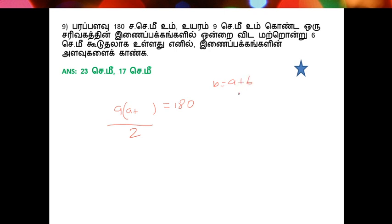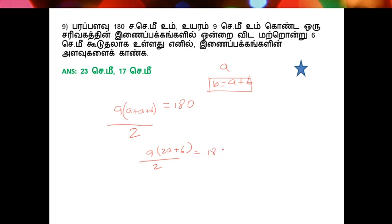6 centimeter plus 6 centimeter — that's the same thing. A is between 2 and A. A is 6, so A plus 6. Now: 90 and 2a plus 6, 2a plus 6.